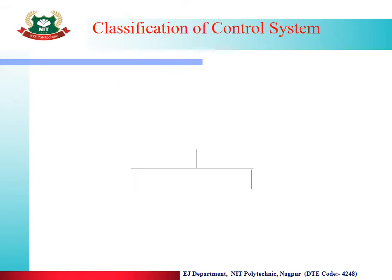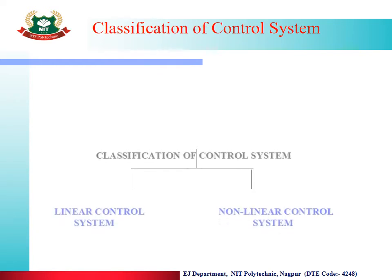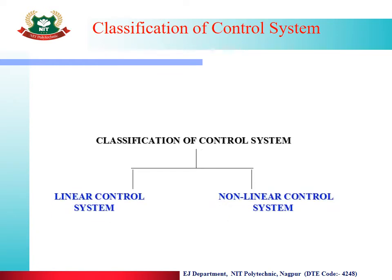Now we will move towards the classification of control system. Previously we saw classification on the basis of controlling element — that is open loop or closed loop. Now there is another way to classify: there are two types — one is linear control system and another one is non-linear control system. Linear, as the name suggests, means in a straight manner, and non-linear means it is not in a straight manner. We will understand each one by one.